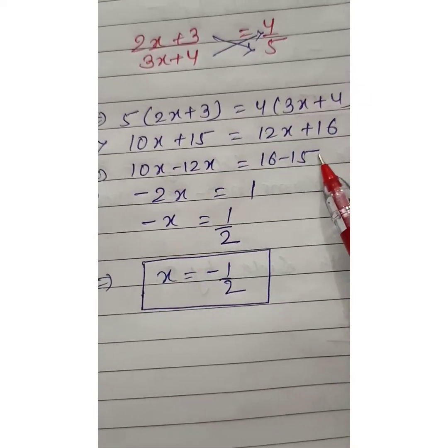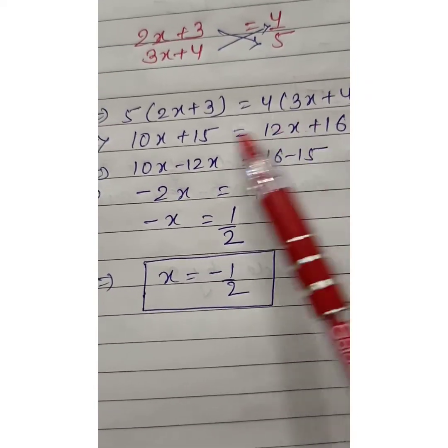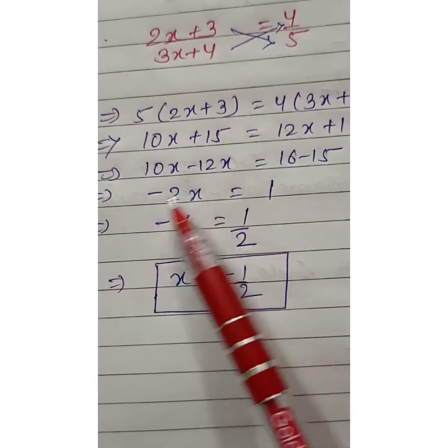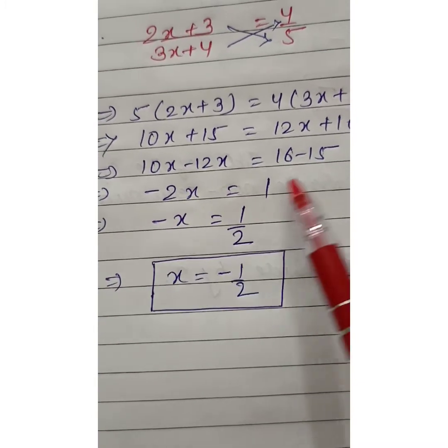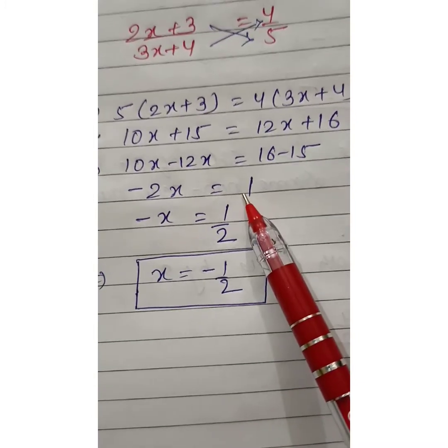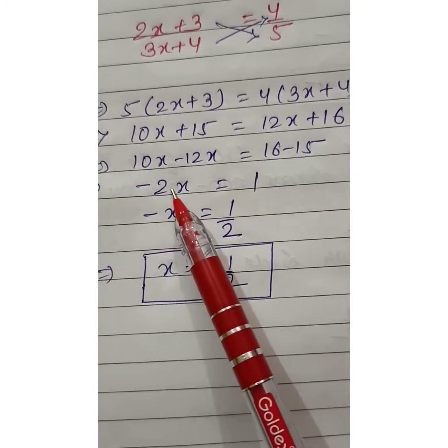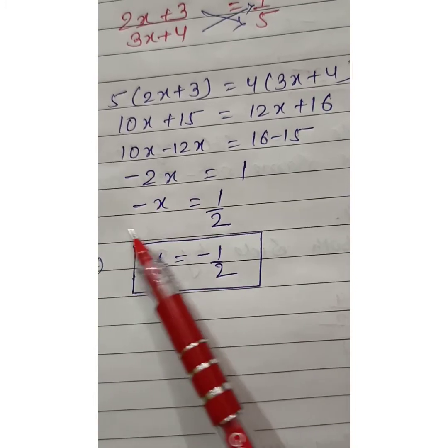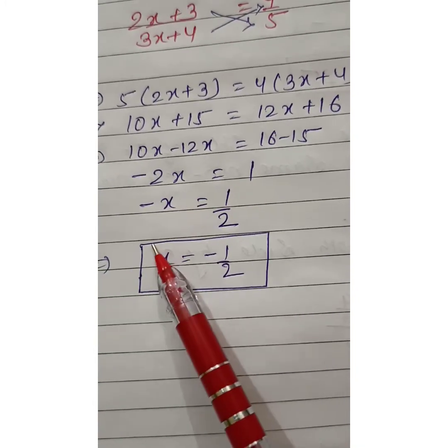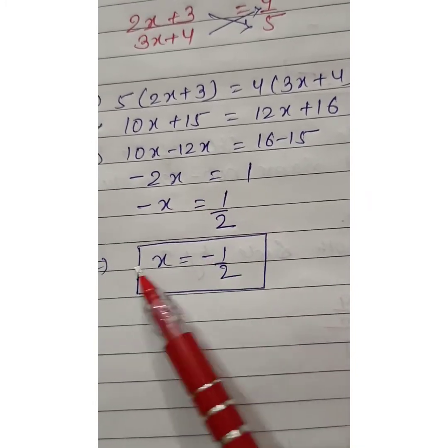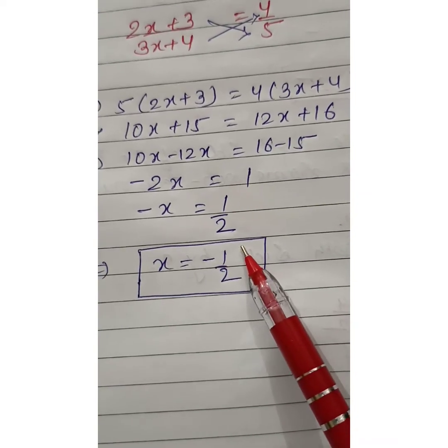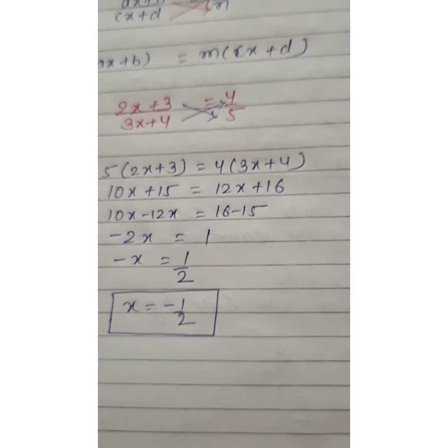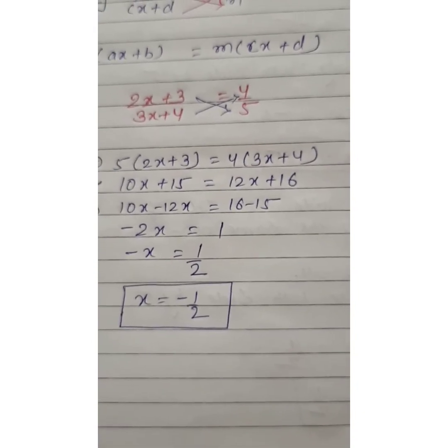When we transpose, 10x minus 12x plus 15 minus 15. We're using both cross multiplication and transposition. Minus 2x equals 1. x equals minus 1 by 2. In this way various conditions are applied for solving linear equations in one variable.